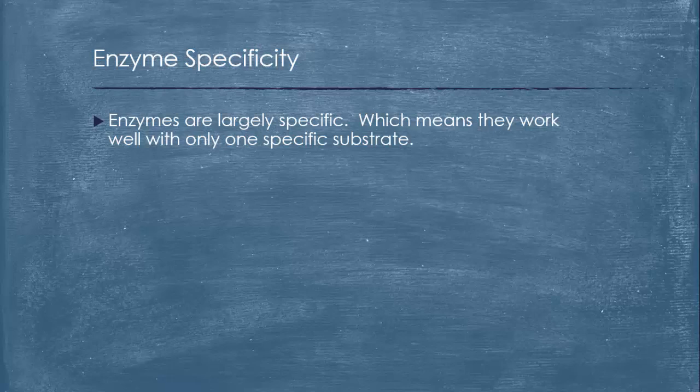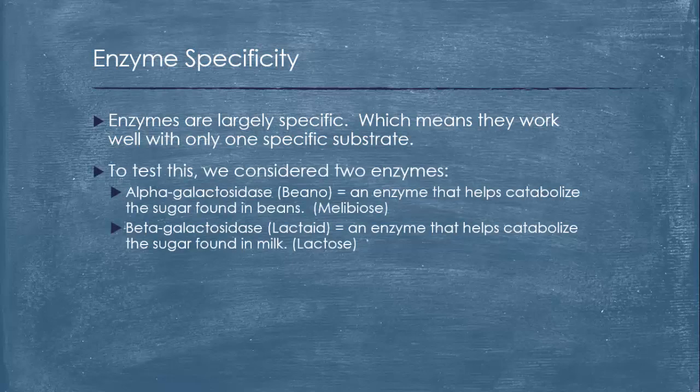Enzymes are largely specific, which means essentially that they work well with only one specific substrate. To test this, in the first part of the lab we considered two enzymes: the alpha galactosidase, which was the beano, that's the enzyme that helps catabolize the sugar found in beans, that sugar is called melibiose; and we looked at beta galactosidase, which is lactase, that enzyme helps catabolize the sugar found in milk, otherwise called lactose.